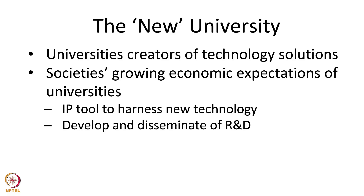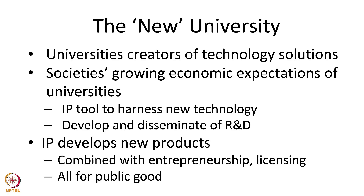Universities, because they were doing focused research, were also able to develop and disseminate information about research and development. Universities also contributed in a way that the IP protecting initial research could be developed into new products. Most of the time, this happened because university research was taken by a private player — a corporation or an institution interested in commercializing it — and brought the technology to the market.